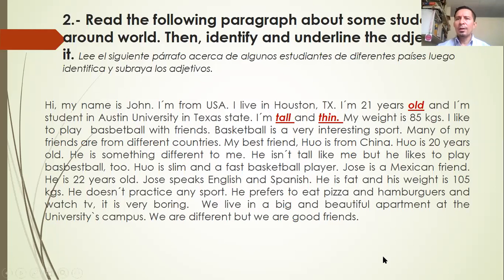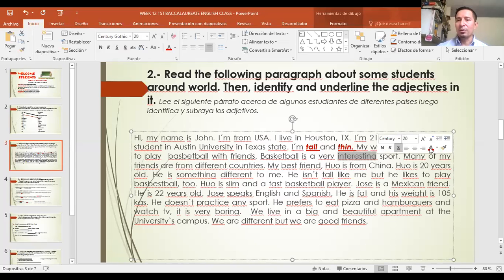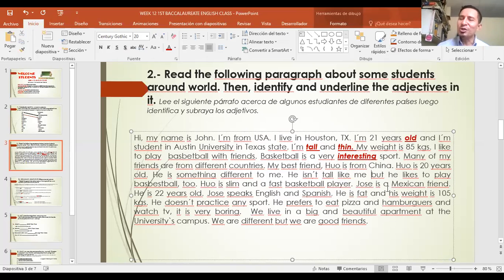So here, guys, we need to find the adjectives and underline them. I found three of them — they are in red color. The first ones: old, tall, and thin. You can find more — busca los adjetivos. Some of them are from activity number one. Ah, interesting — ¿crees que interesting es un adjetivo? Yes! I've helped you with four. You have to try to find the others.